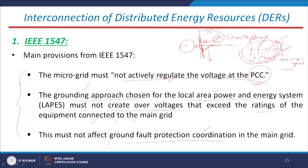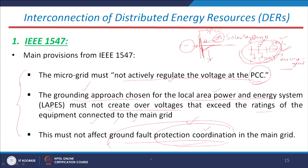Another standard rule is that the grounding system must not affect the ground fault protection coordination in the main grid system. Protection devices connected in the ground system should be coordinated with each other properly so that any disturbance incepted inside the smart grid is handled appropriately.